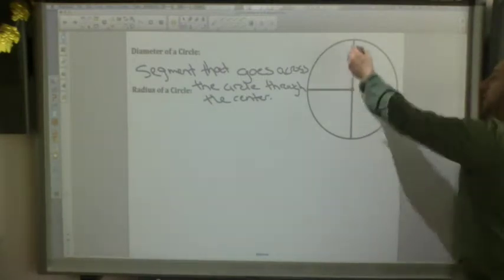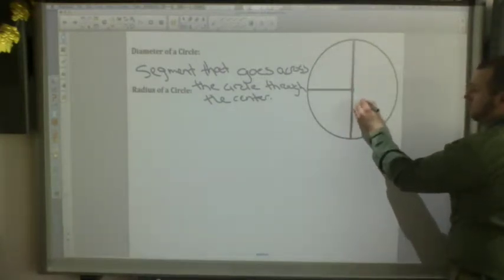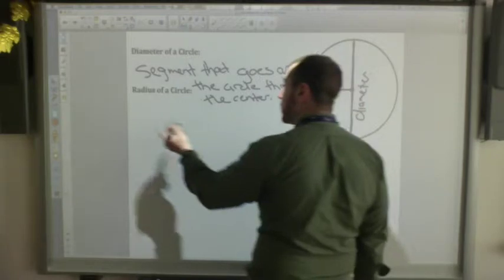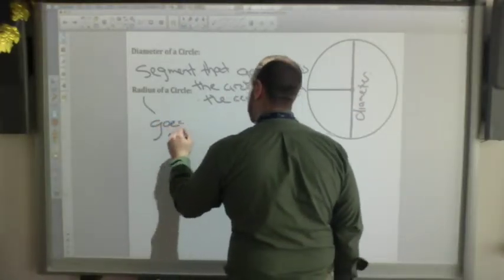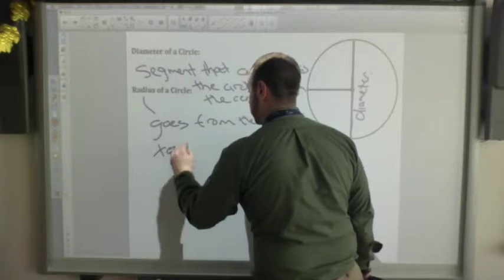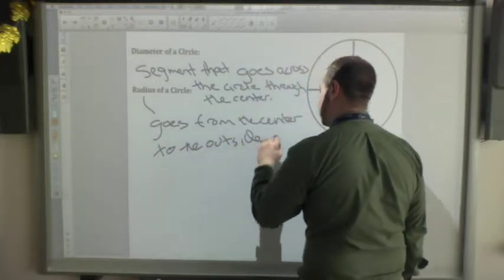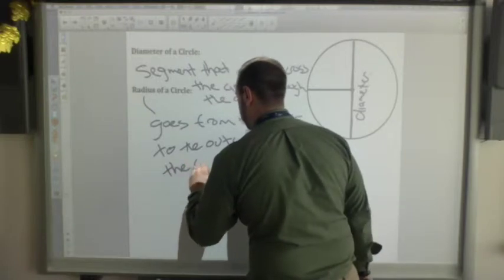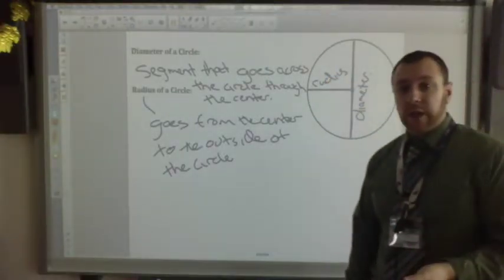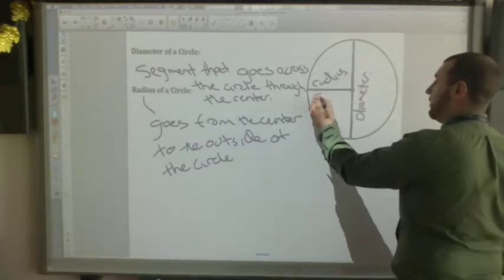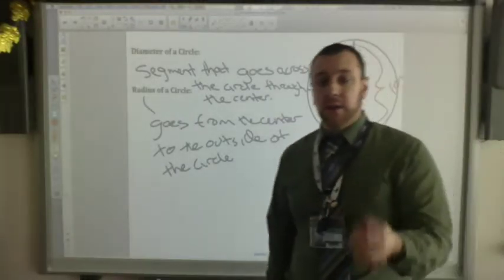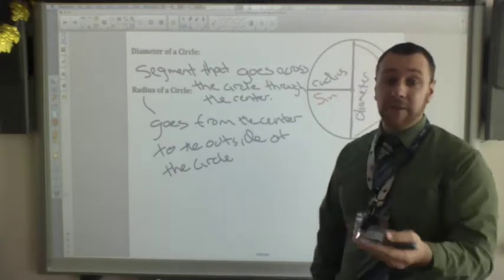The diameter of the circle is the segment that goes across the circle through the center. It's this big long line here. So this is the diameter, it goes through the center all the way through. The radius goes from the center to the outside of the circle. So this is my radius. The trick with the radius and the diameter, if this is, let's say, five inches, the diameter is 10 inches. The diameter is always double the radius, or the radius is always half of the diameter.